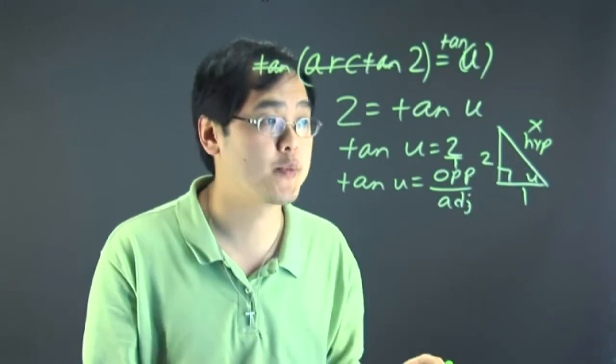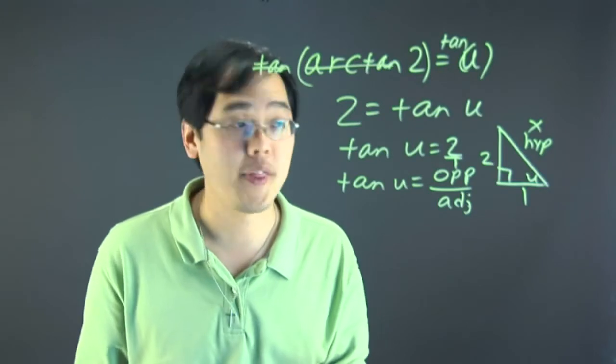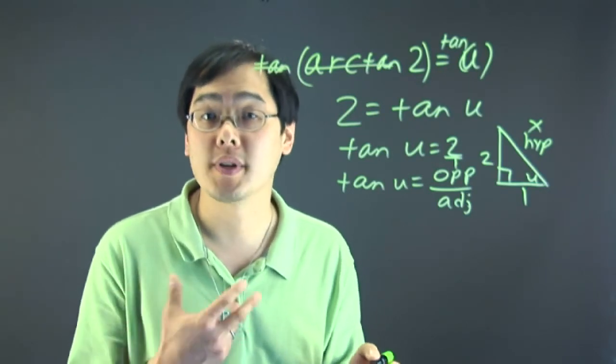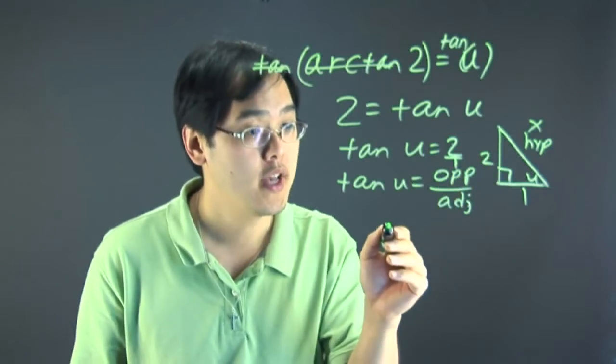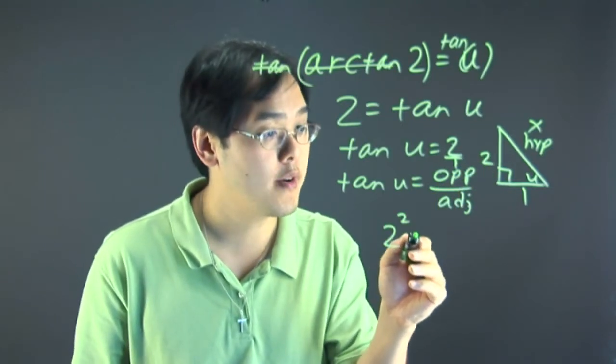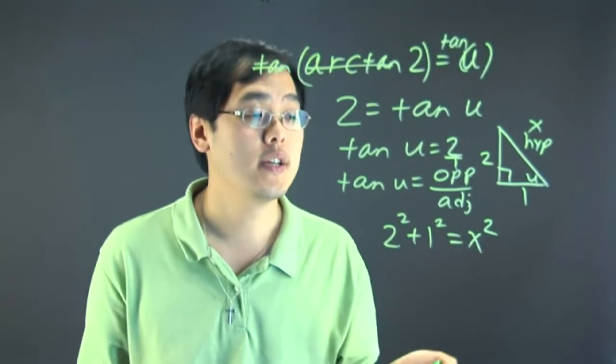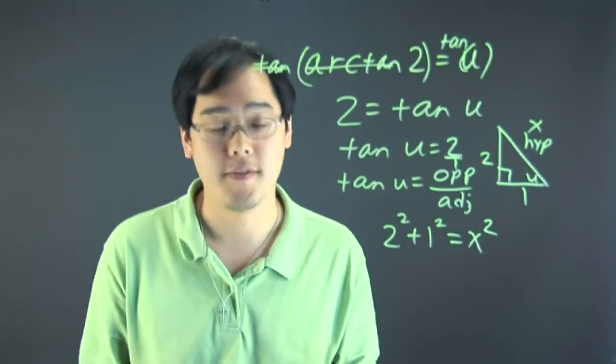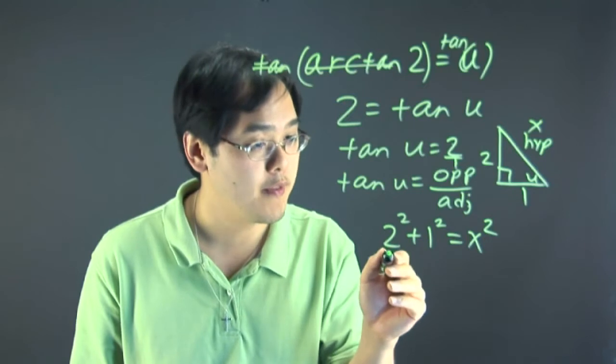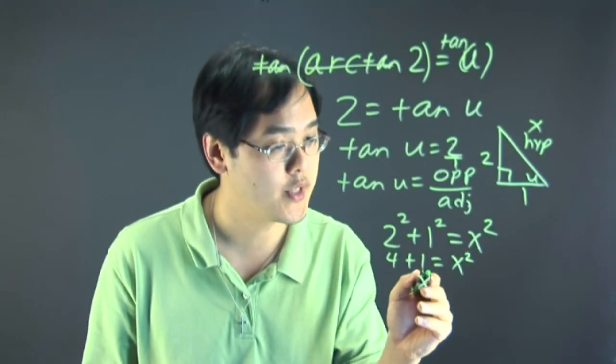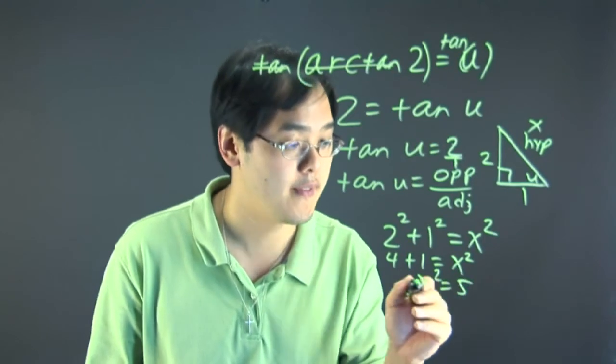To transform this to an algebraic expression, you want to use the Pythagorean theorem, which is a² + b² = c². Leg squared plus leg squared equals hypotenuse squared. So you have 2² + 1² = x², and then you can get x by itself from here. This is going to be 4 + 1 = x². So x² = 5, and you can solve for that very easily.